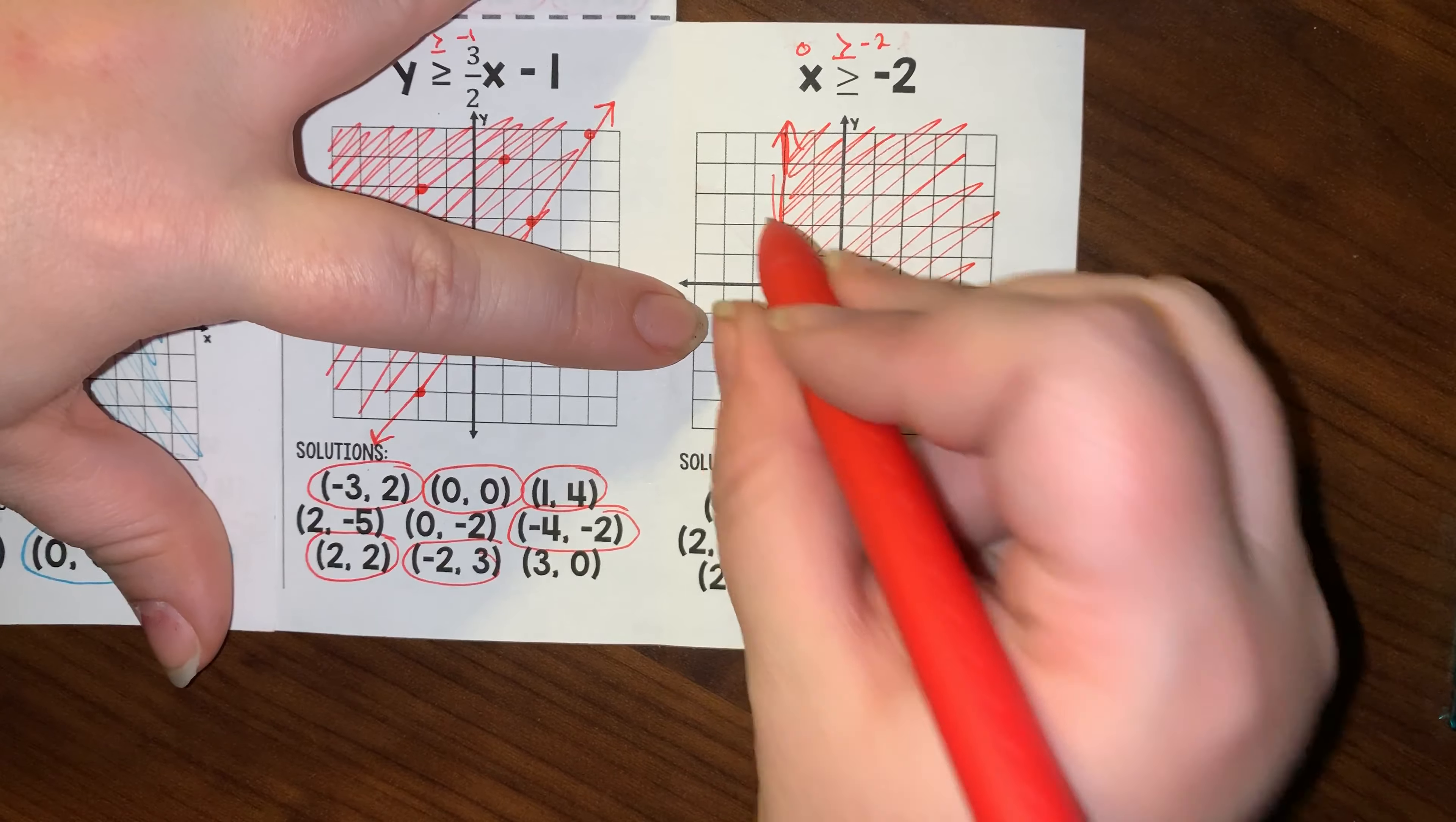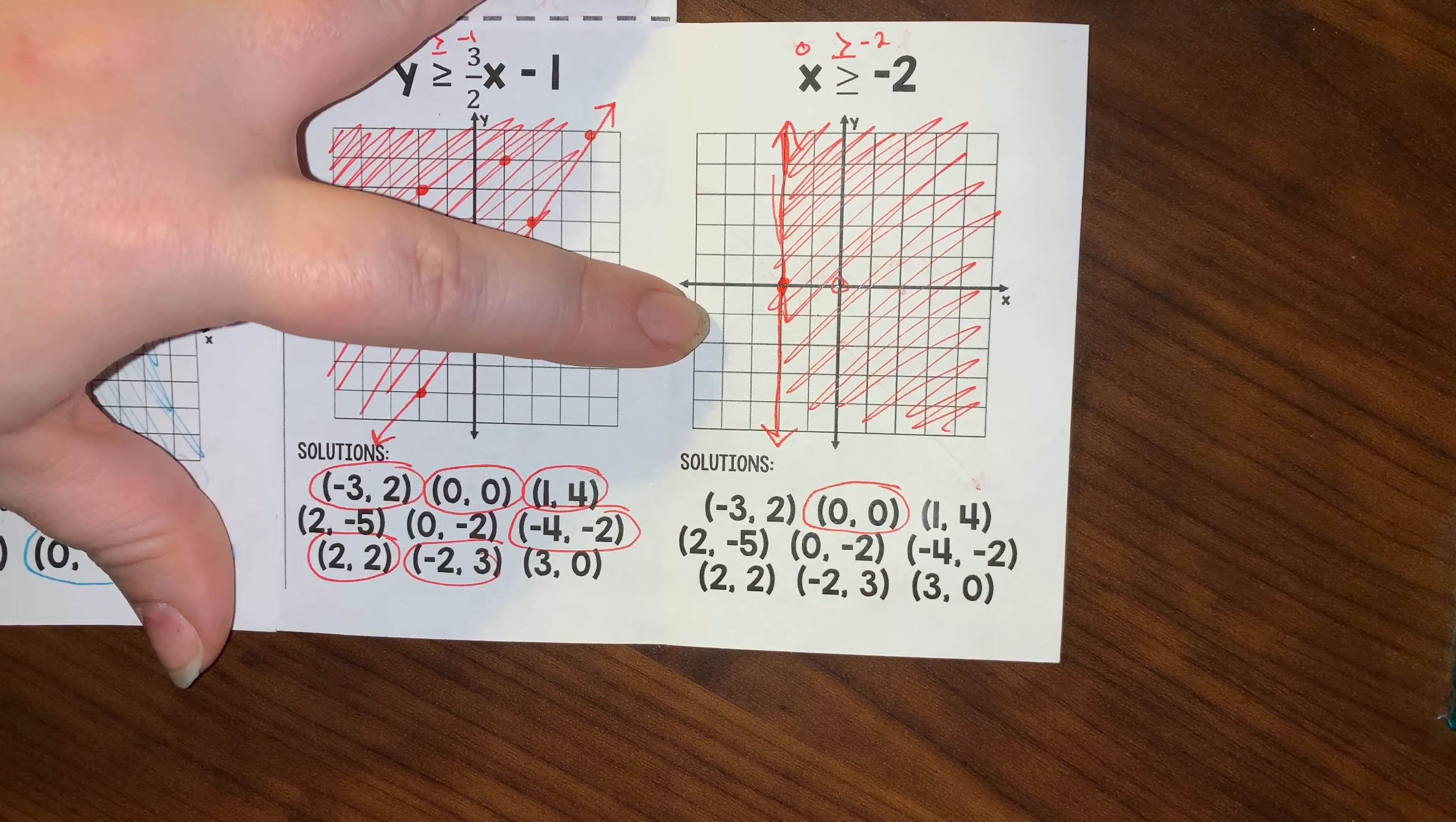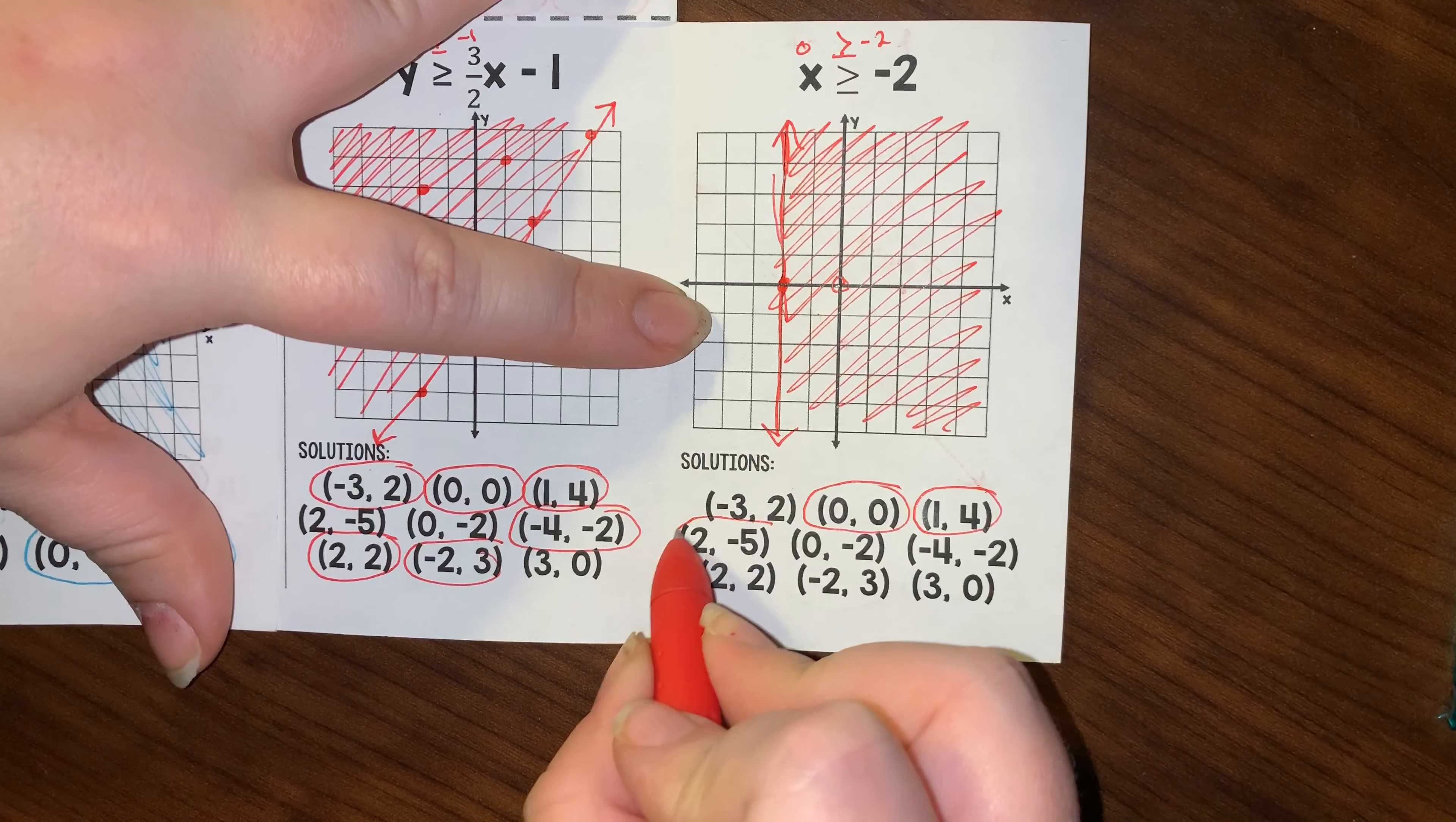Negative 3, 2 is not within that shaded region, so that is not a solution. 0, 0 is within that shaded region, so that is a solution. 1, 4 is a solution. 2, negative 5 is also a solution.